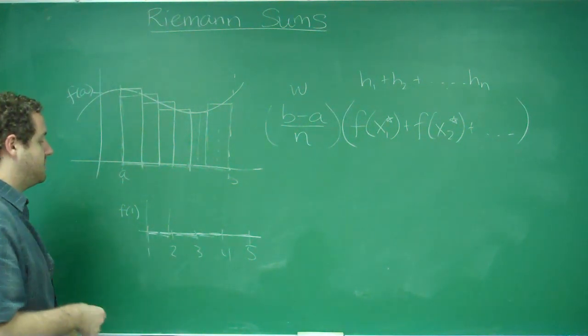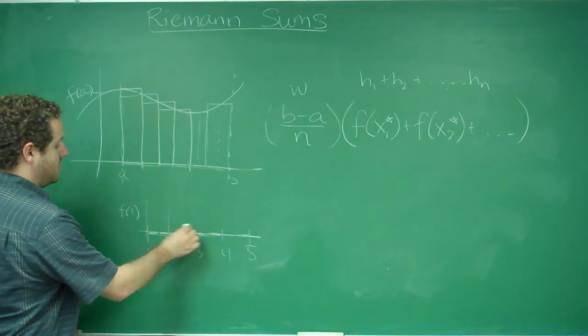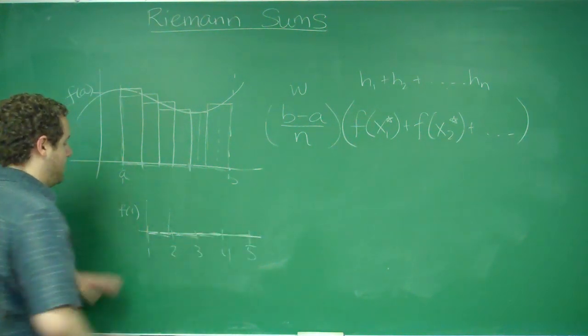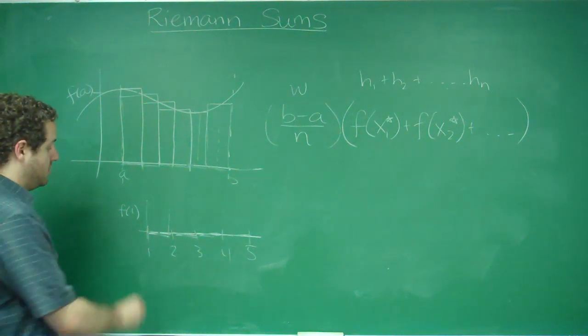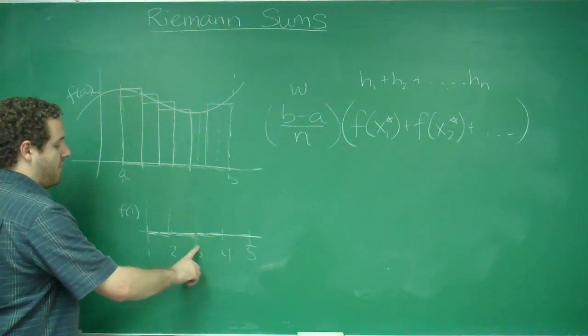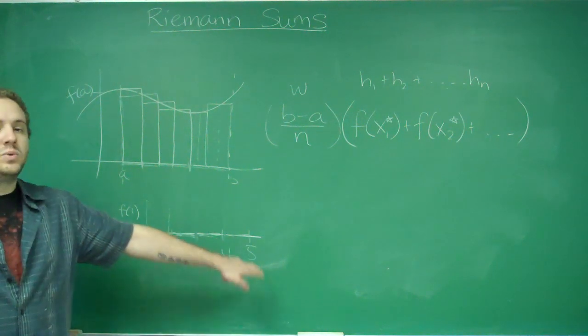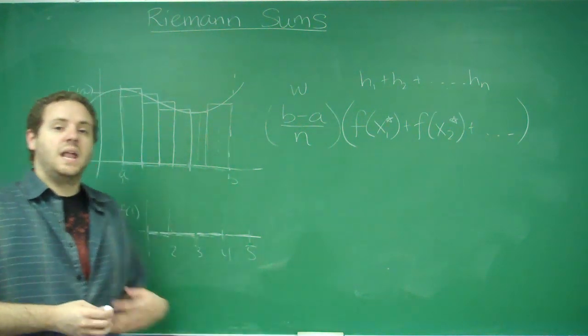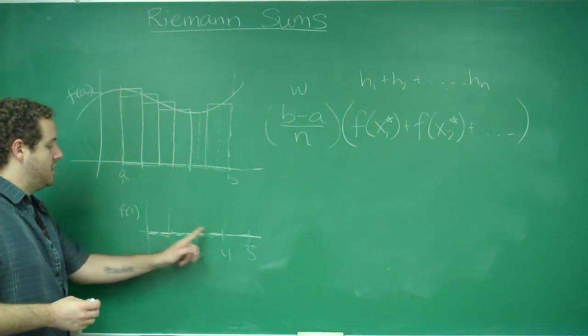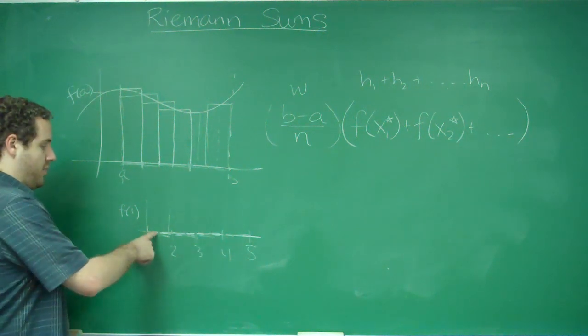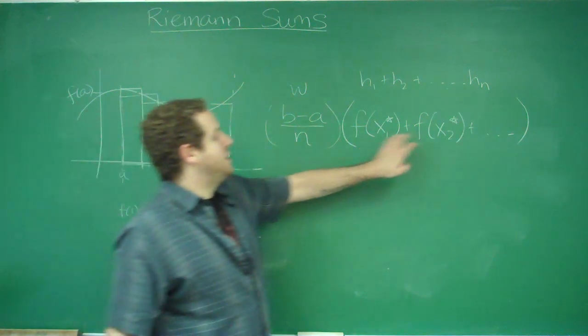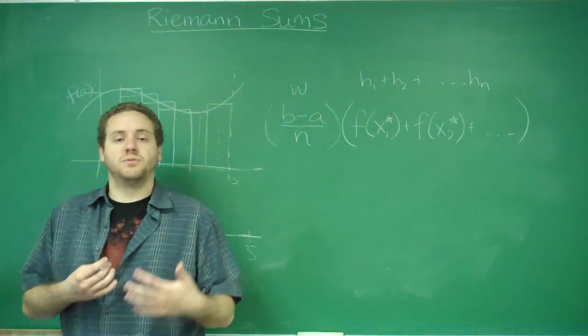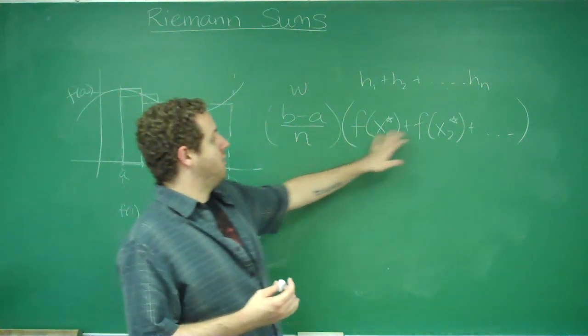So you can see here that if you were doing right endpoint, you would count f of 2, f of 3, f of 4, and f of 5, and you wouldn't have f of 1. And if you were doing midpoint here, you'd have to get the middle of all of these, which would be 3 halves, 5 halves, 7 halves, 9 halves. And these would be all of the x's you'd plug into your f to evaluate all of the heights.